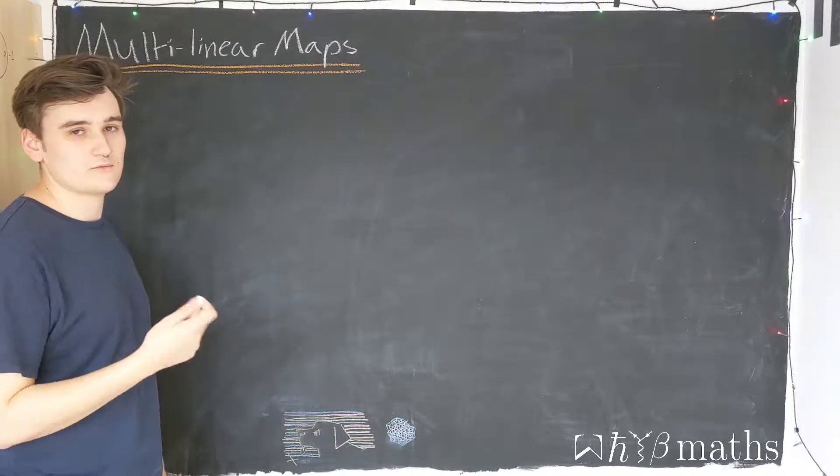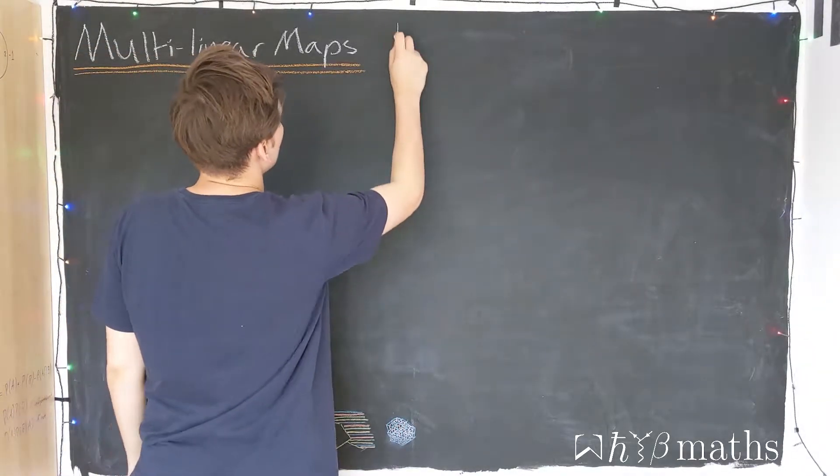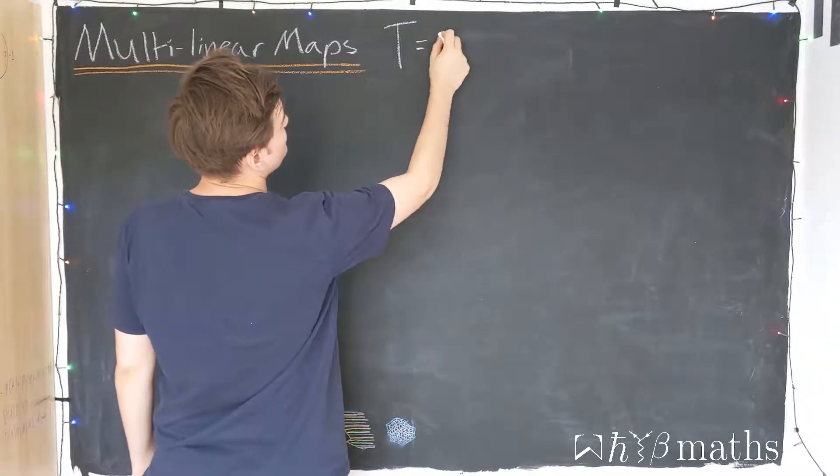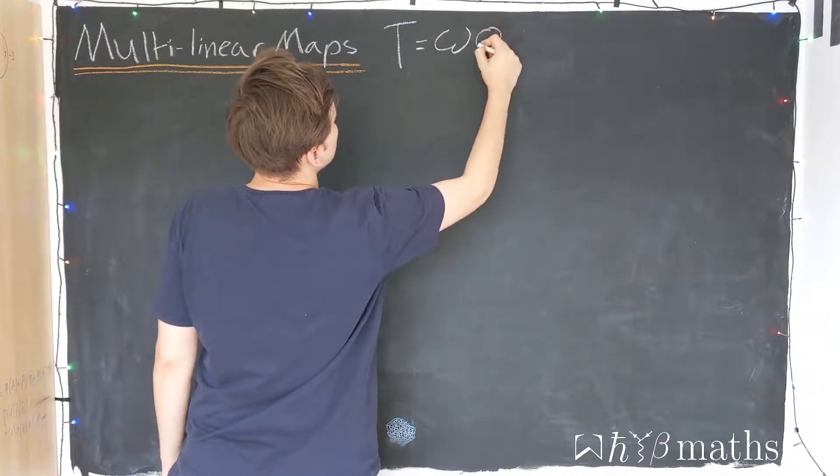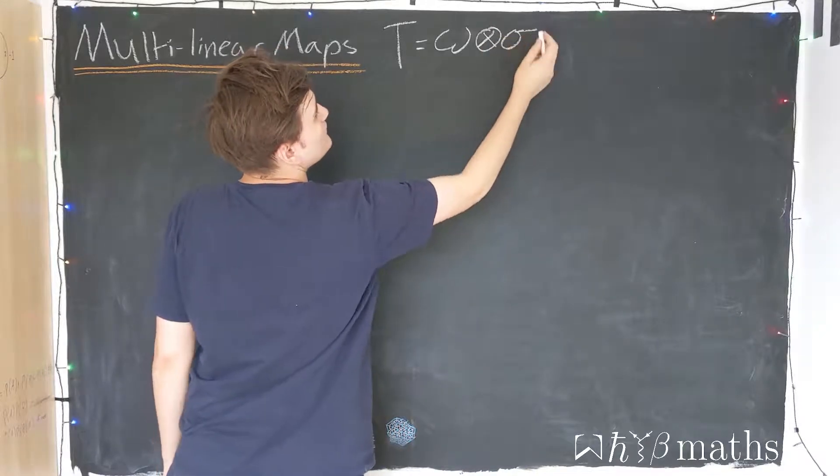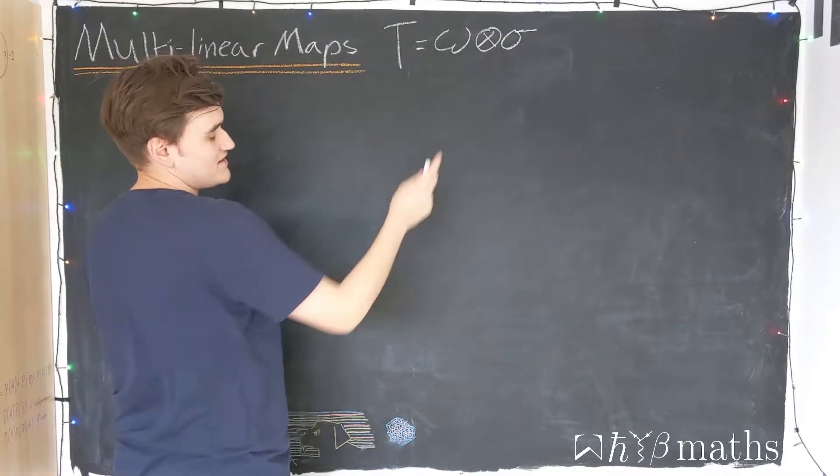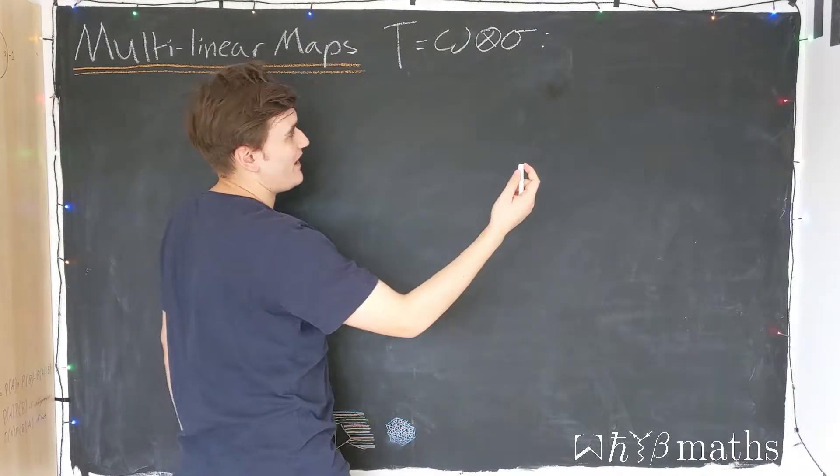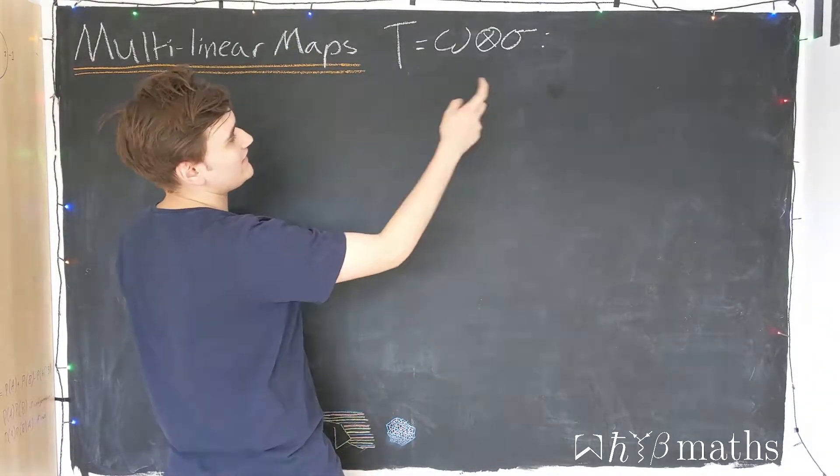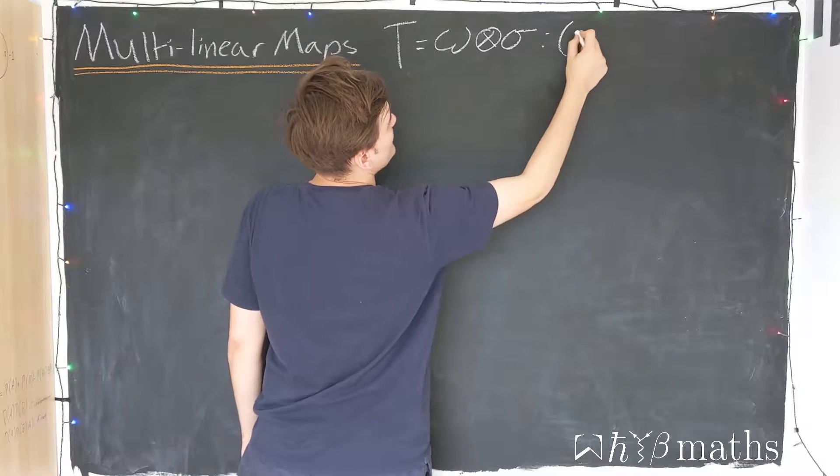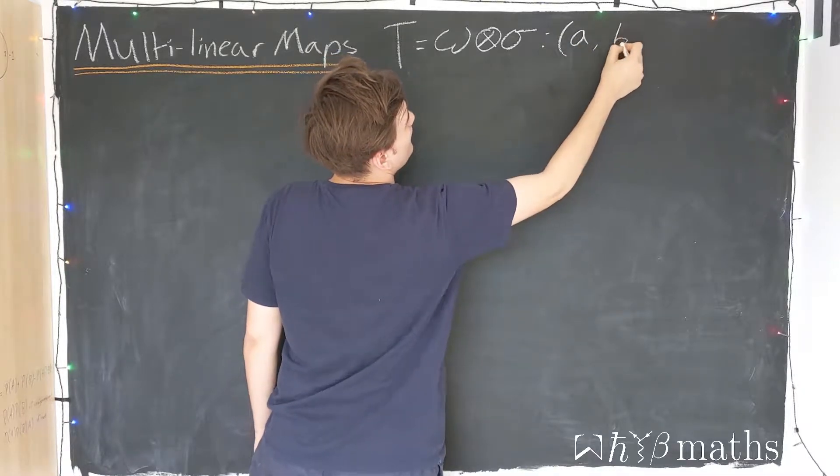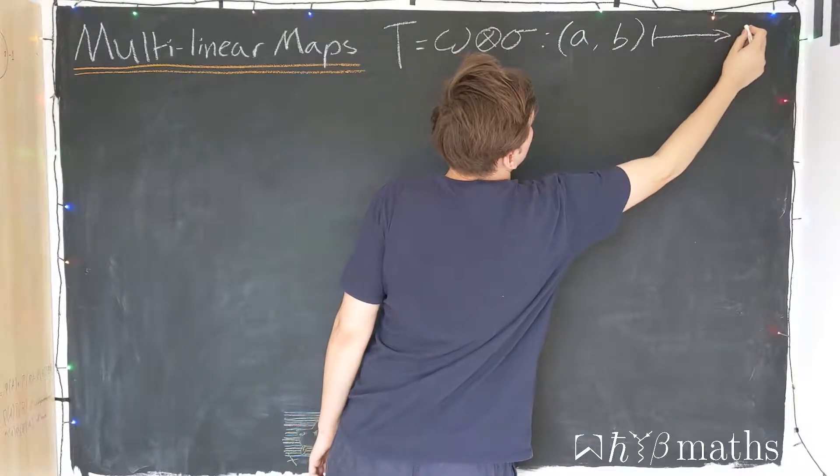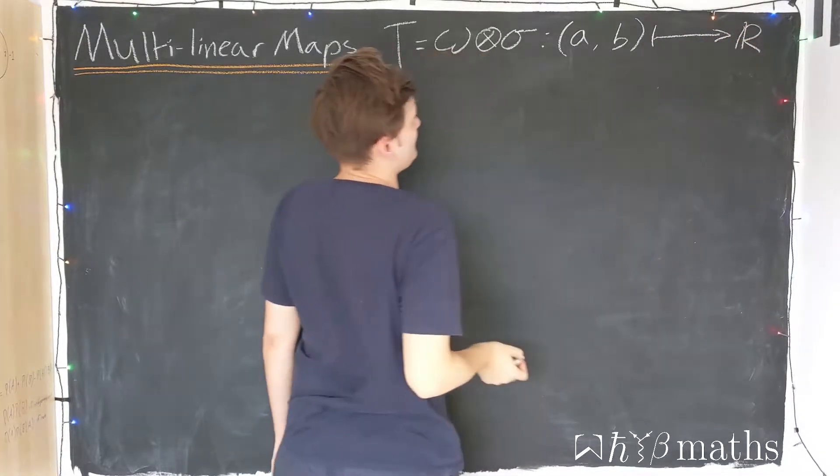So in the last video, we constructed a tensor which I call T. In our case, we saw that this was formed out of two dual vectors taken together using this tensor product symbol. And we saw that this is a map, in fact a multilinear map, which acts on a pair of vectors to produce a real number.